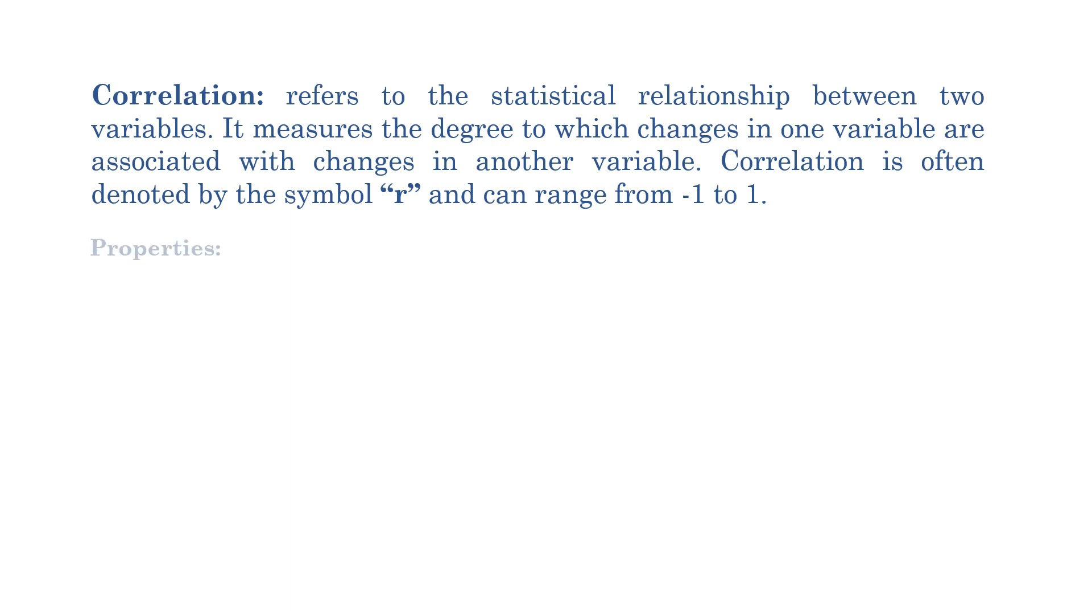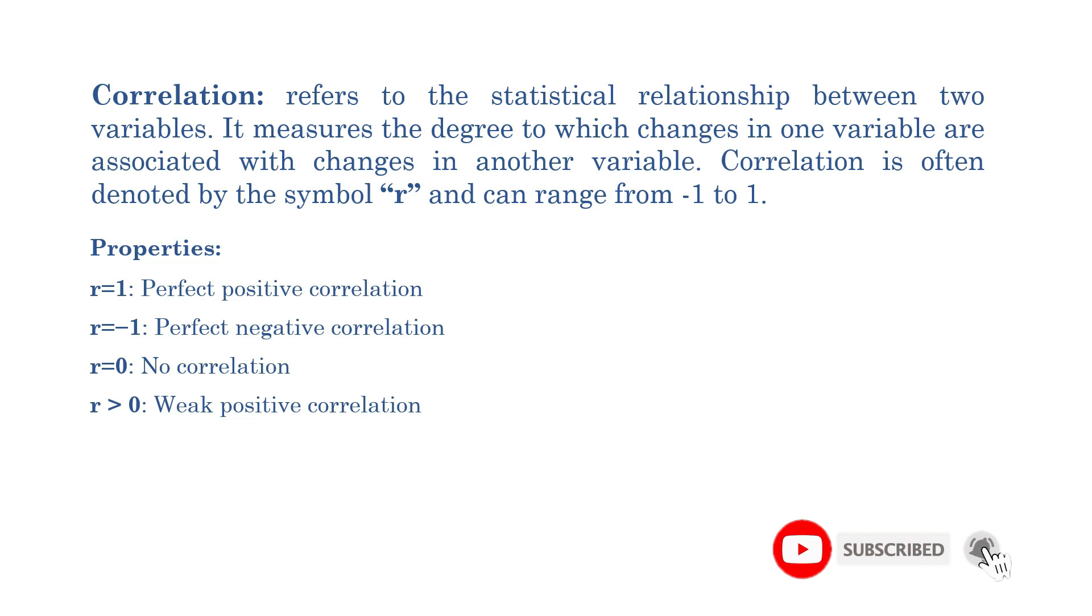Let me show you some important properties to have in mind when reading the correlation results. When correlation is equal to 1, there is a perfect positive correlation. When correlation is equal to 0, there is no correlation or there is no linear correlation. When correlation is greater than 0, there is a weak positive correlation. When correlation is less than 0, there is a strong negative correlation.